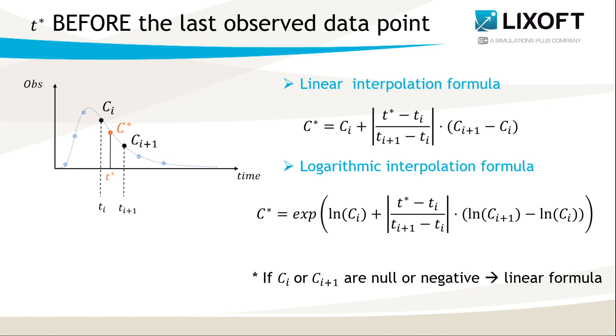The logarithmic interpolation is similar. However, now the formula contains logarithms, so it will fail if one of the measured concentrations is null or negative. In such intervals, the method is switched to the linear interpolation.